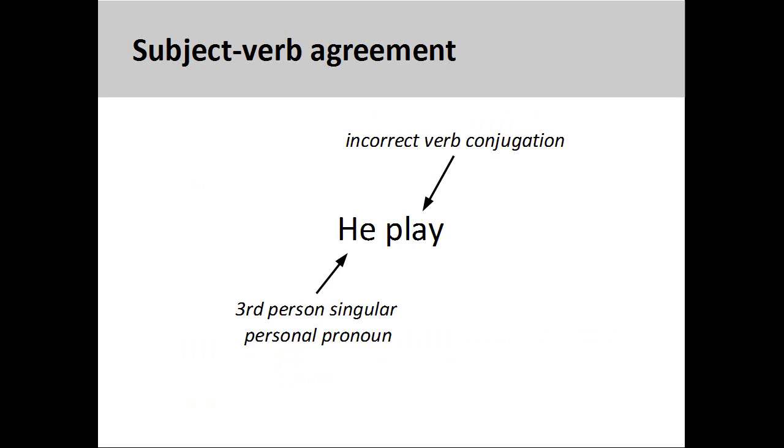When conjugating verbs, it is important to maintain agreement between the subject and the verb. That is to say, the verb must agree with the subject both in number and person.